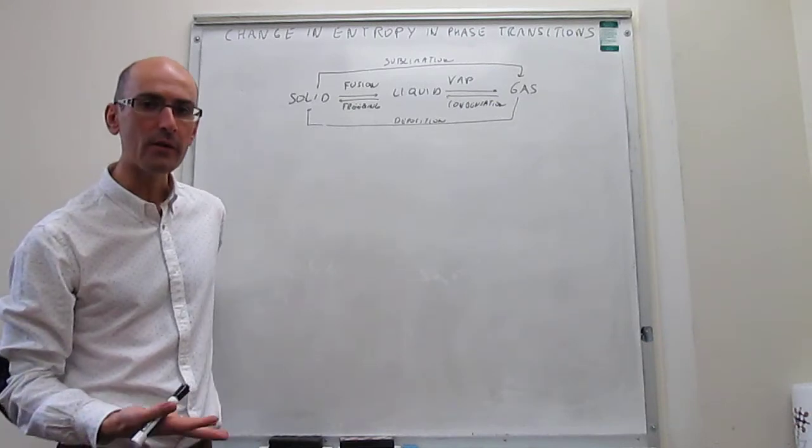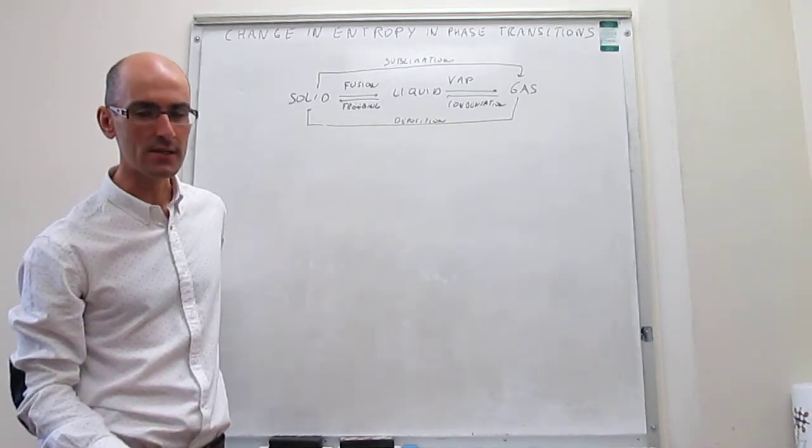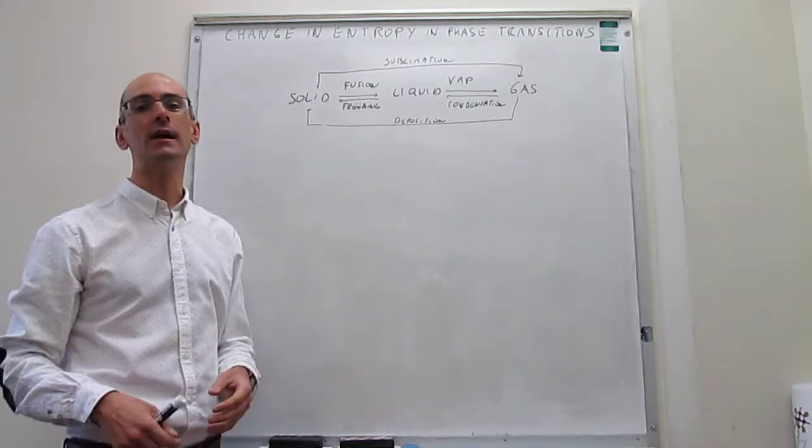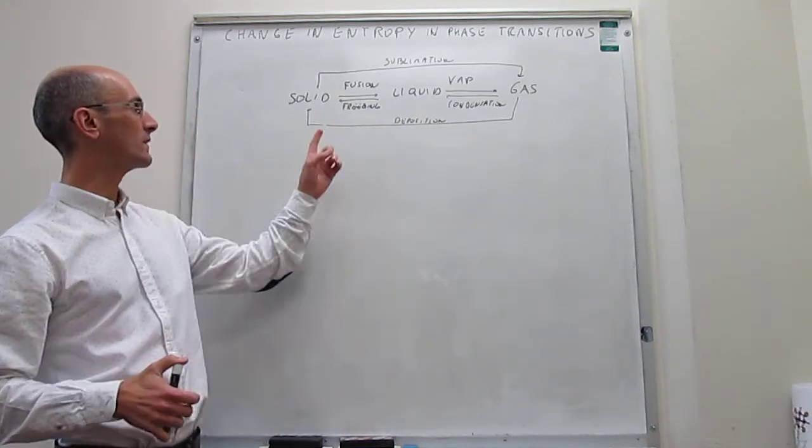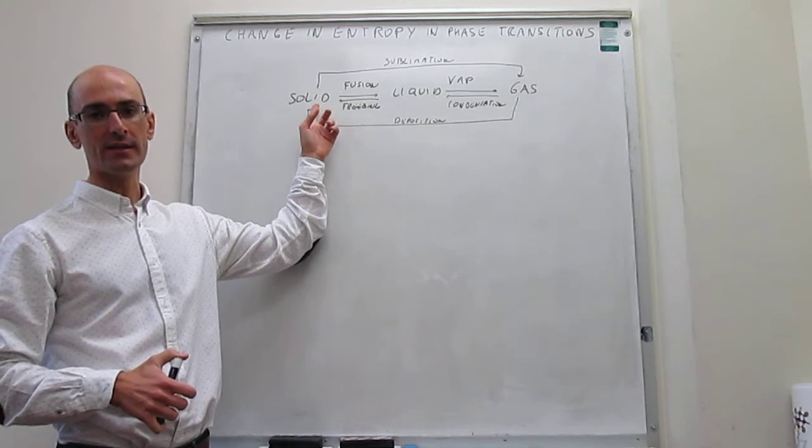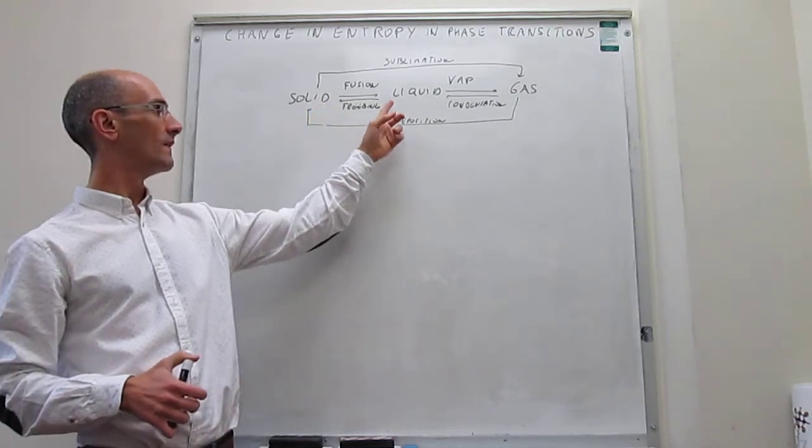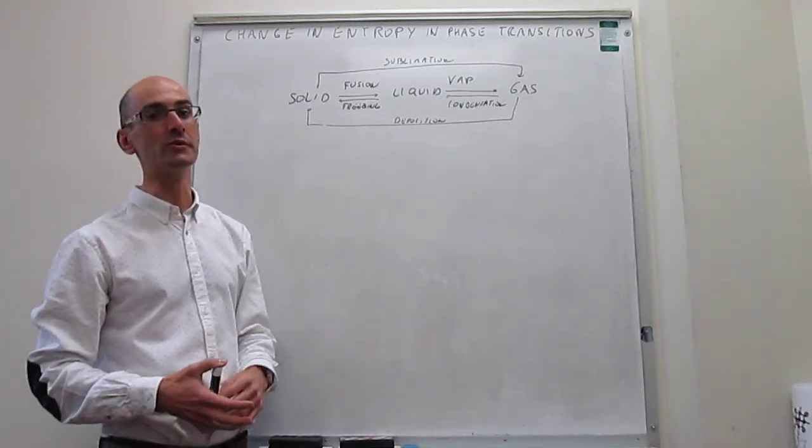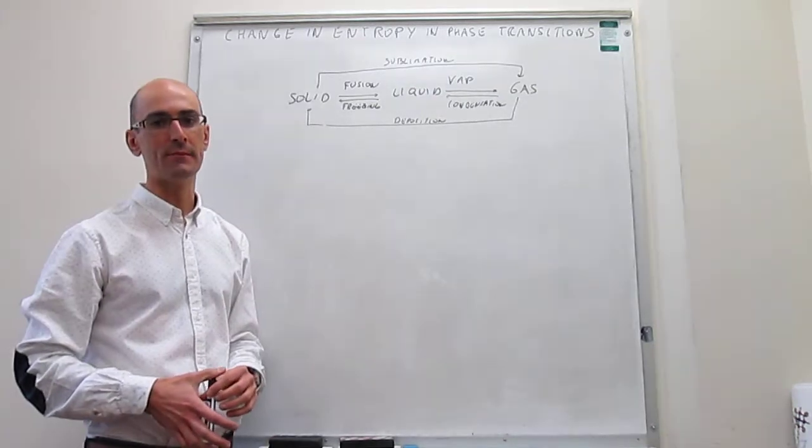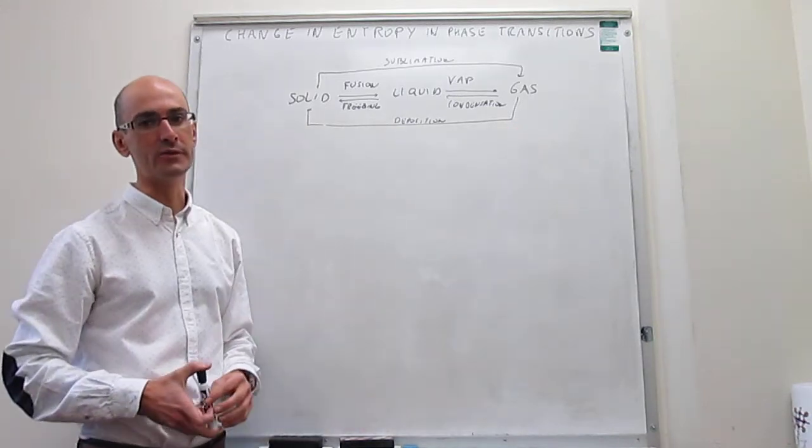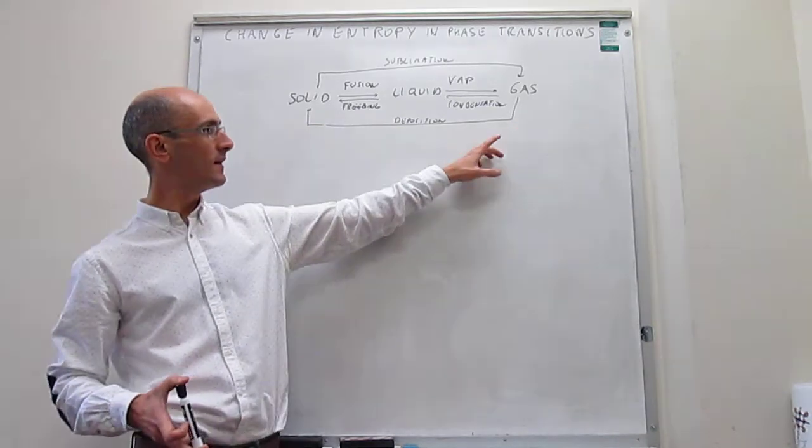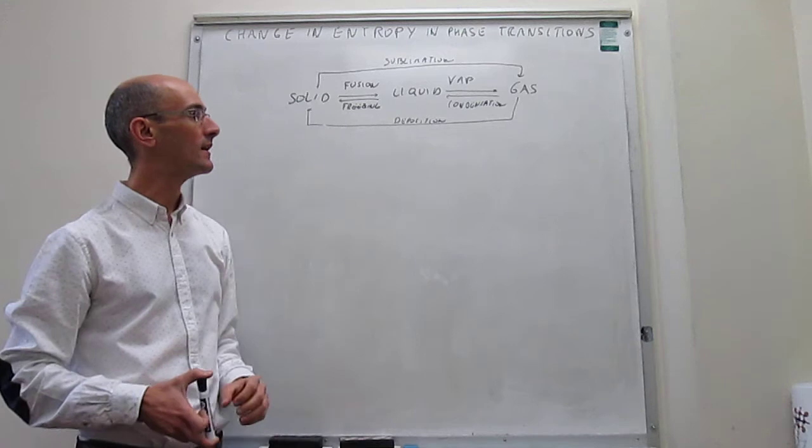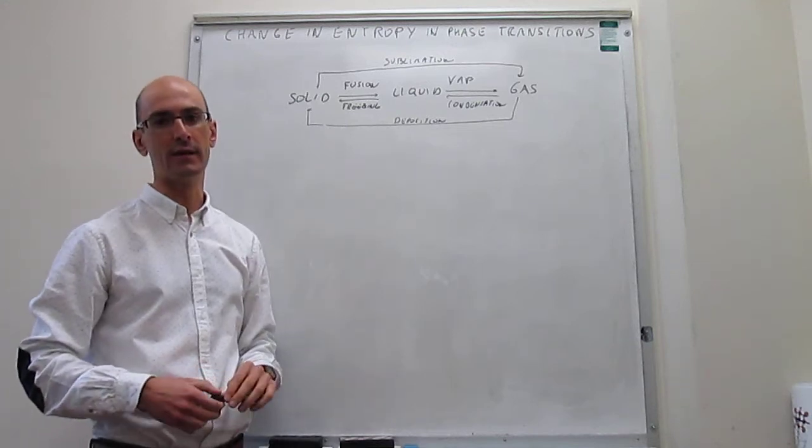The first thing we can think about is whether we can predict the sign of the change in entropy. Obviously, it seems natural to think that a solid is intrinsically less entropic than a liquid and a gas. If you try to use the metaphor of disorder as a metric for entropy, a gas is far more disordered than a liquid than a solid. Therefore, you would expect the gas to have more entropy than a liquid and a solid.